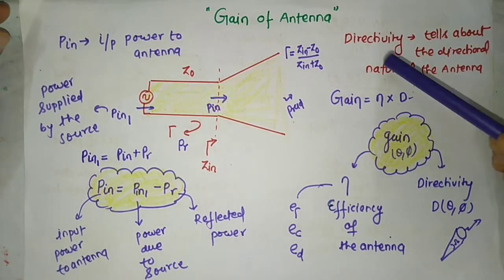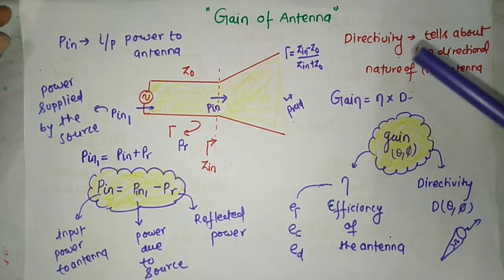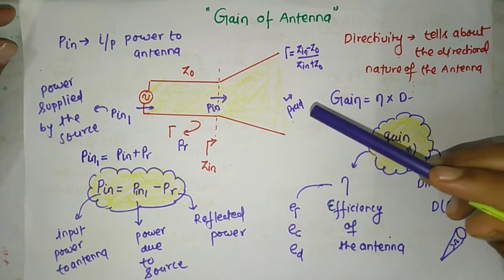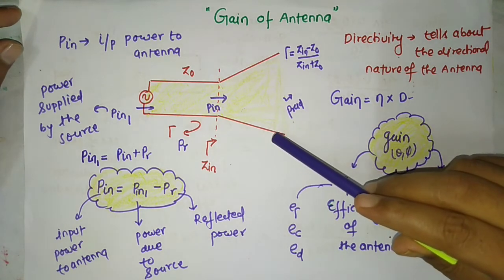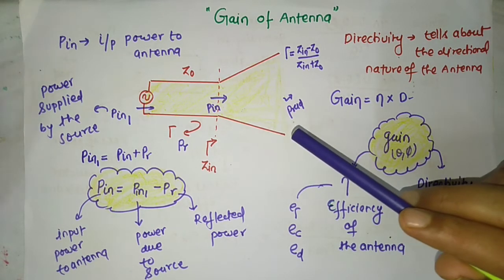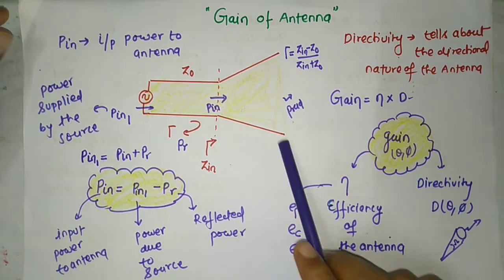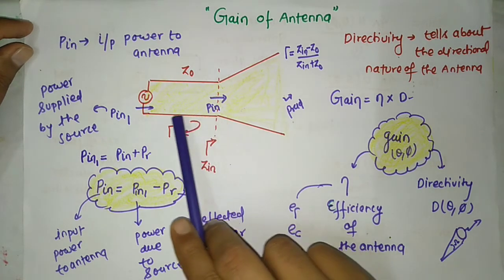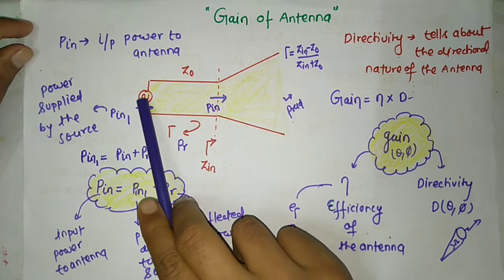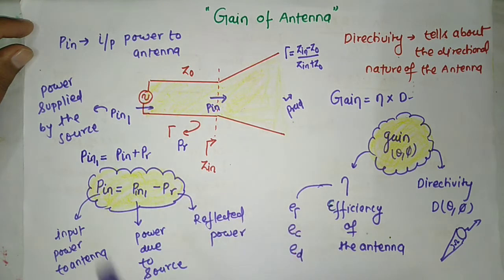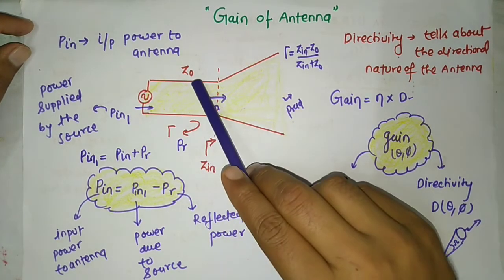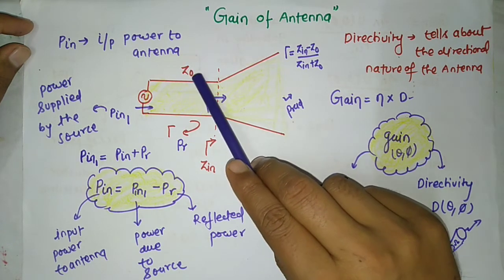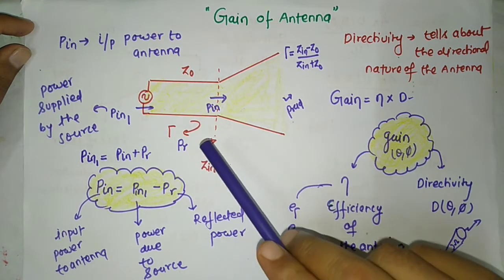In this lecture we will study the concept of gain. First, recall the physical structure of the antenna and losses on the antenna. An antenna is a metallic structure connected with a transmission line, and the transmission line is connected with a source. The transmission line is associated with one parameter known as characteristic impedance.